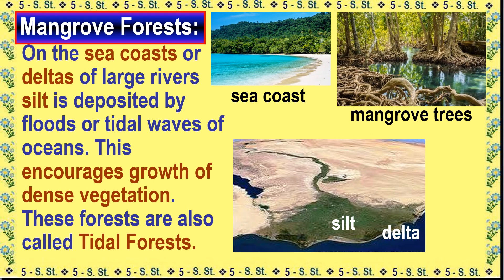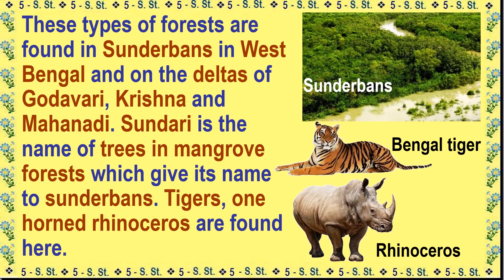On the sea coasts or deltas of large rivers, silt is deposited by floods or tidal waves of oceans, which encourages growth of dense vegetation. These forests are called tidal forests or mangrove forests. Such forests are found in Sundarbans in West Bengal and on the deltas of Godavari, Krishna and Mahanadi. Sundari is the name of the trees in mangrove forests, which gives its name to Sundarbans. Tigers and one-horned rhinoceros are found here.